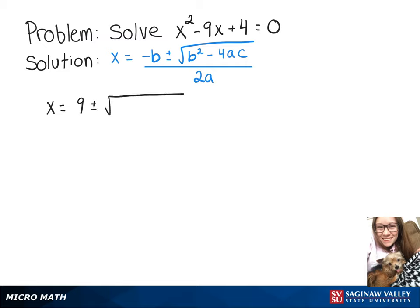plus or minus the square root of negative 9 squared minus 4 times 1 times 4 over 2 times 1.